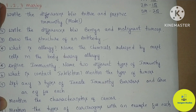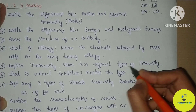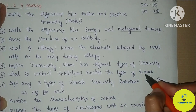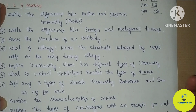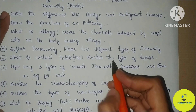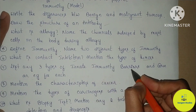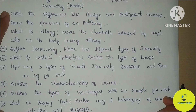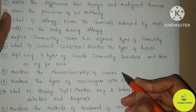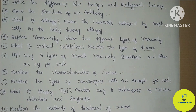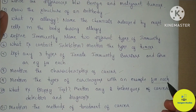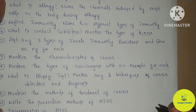Immunity: there are two different types of immunity that will be mentioned. Contact inhibition, types of tumors — three types of innate immunity barriers with an example for each. Characteristics of cancer, characteristics of carcinogens — mention the types of carcinogens with an example for each.